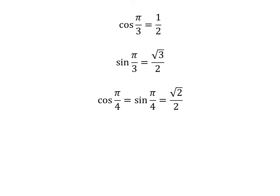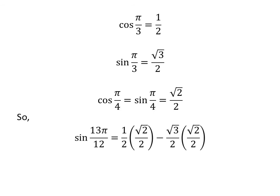As we know, cosine of pi upon 3 is equal to 1 half, and cosine of pi upon 4 is equal to sine of pi upon 4 is equal to square root of 2 upon 2. So we plug in these values in the above equation. We get sine of 13 times pi upon 12 is equal to half times square root of 2 upon 2 minus square root of 3 upon 2 times square root of 2 upon 2.